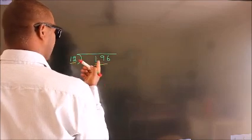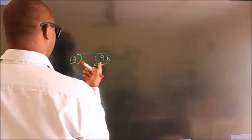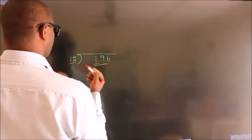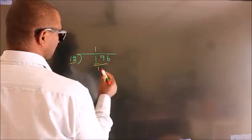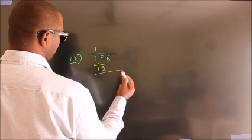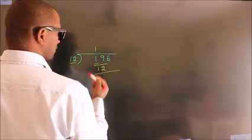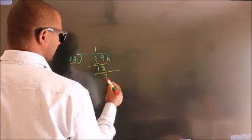19. A number close to 19 in the 12 table is 12 once, 12. Now we should subtract. We get 7.